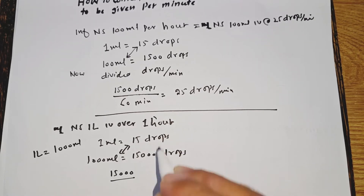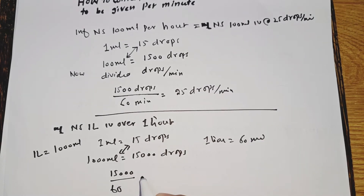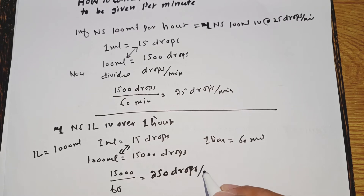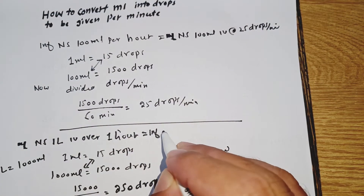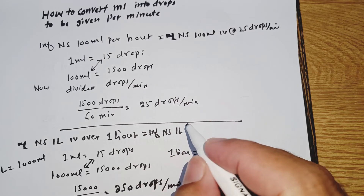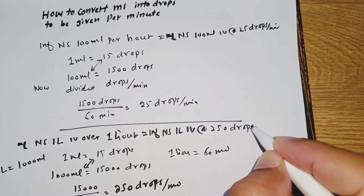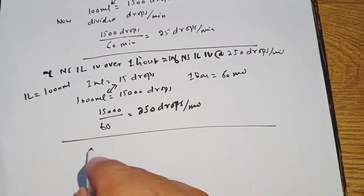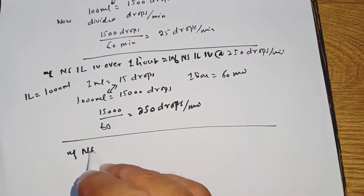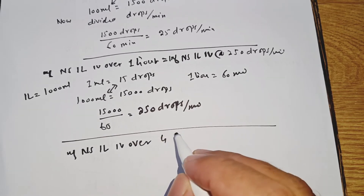Now divide the total drops over total minutes. Drops are 15,000 and the minutes are 60, so it comes to 250 drops per minute. We can write it as: infusion normal saline 1 liter IV at the rate of 250 drops per minute.